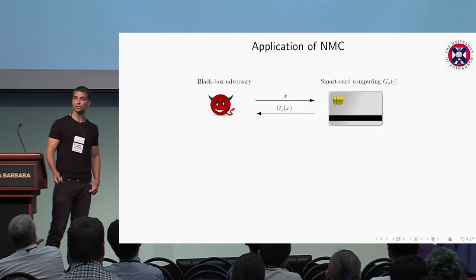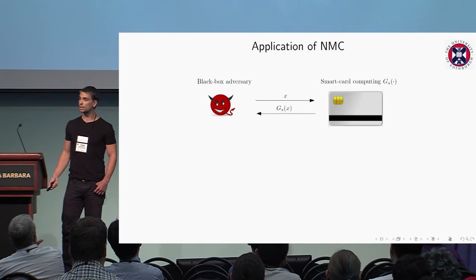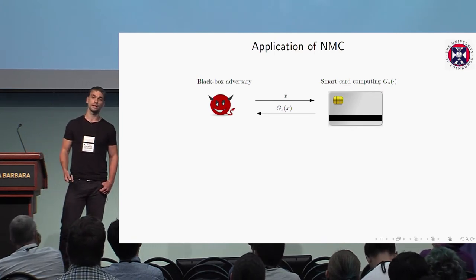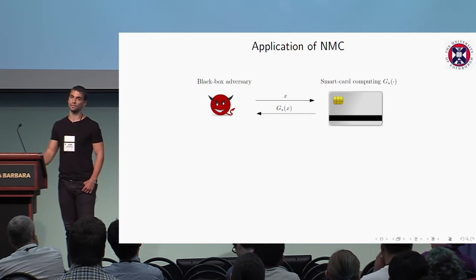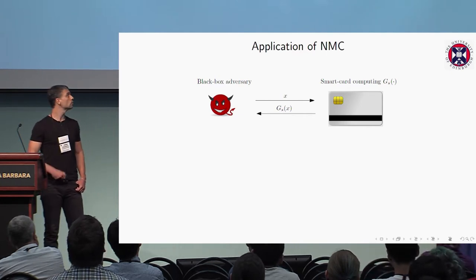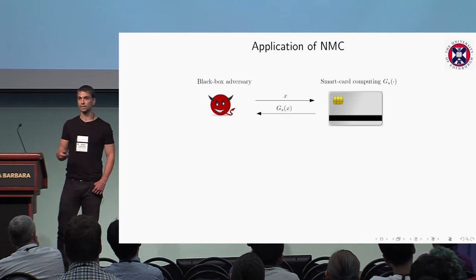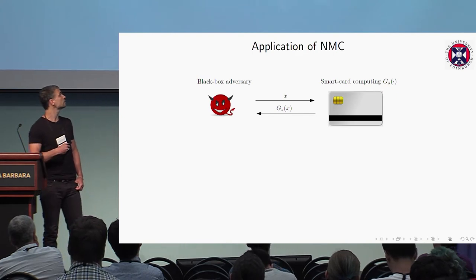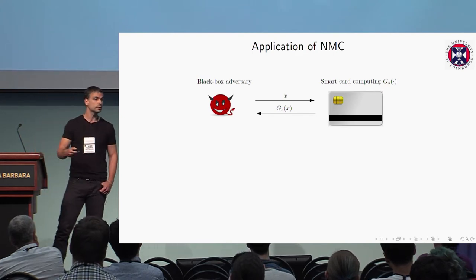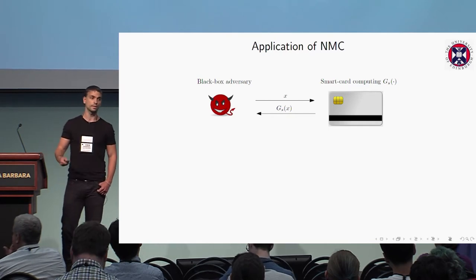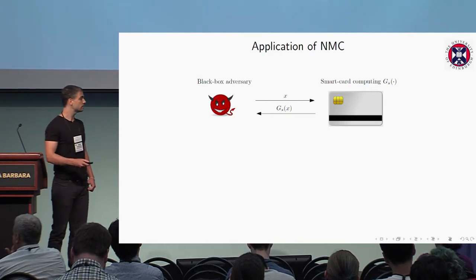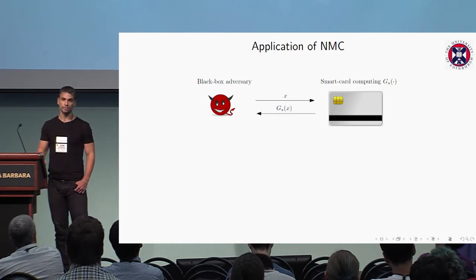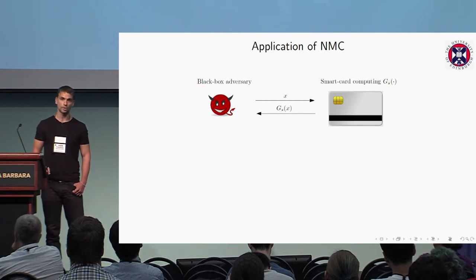The main application of non-malleable codes proposed in the original paper is achieving tamper resilience against physical attacks. Consider any cryptographic hardware — it can be a smart card that computes some functionality G over private state S, for example computing digital signatures over signing key S. The standard black box adversary queries the hardware with input X and receives the output of the computation.